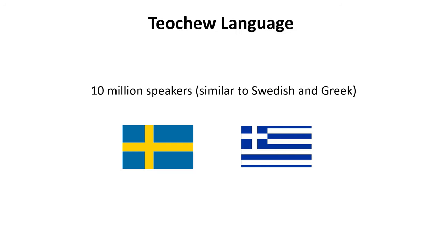Let's go over some basic facts about the Diaoju language. First, it has about 10 million speakers, which is about the same as Swedish or Greek. But unlike these two languages, Diaoju is not associated with any nation-state, so it is much less widely known.